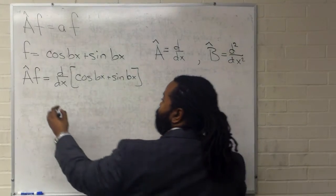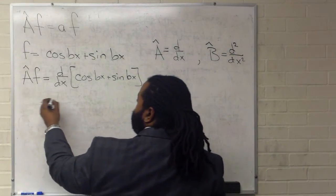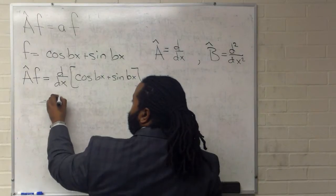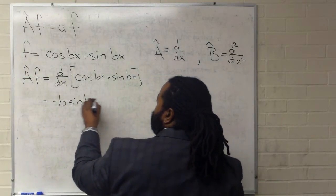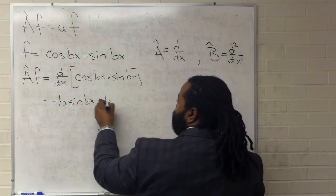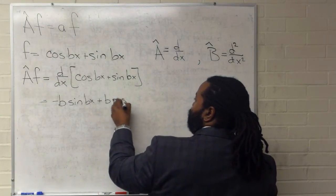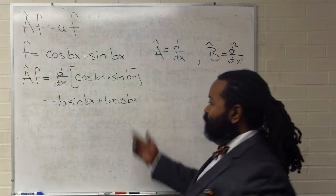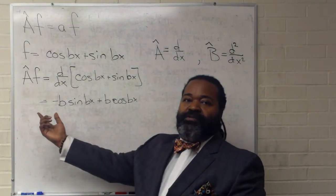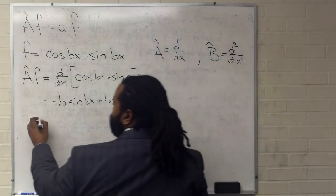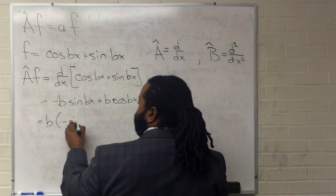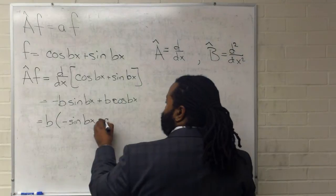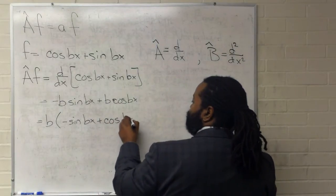We can step through taking that derivative. Relatively straightforward. We will get minus b sine bx plus b cosine bx. At this point, we can factor out a b. That gives us b times negative sine bx plus cosine bx.